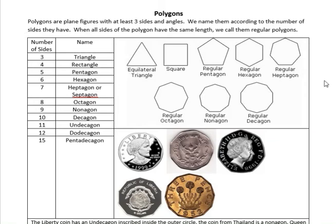Hi, I'm Carly McEvoy. I wanted to talk about polygons today. Polygons are plain figures, and a plain figure just means that they're flat, two-dimensional, with at least three sides and angles. We name them according to the number of sides they have.